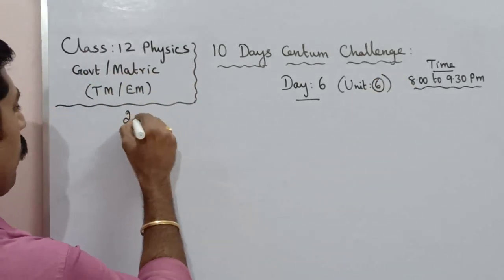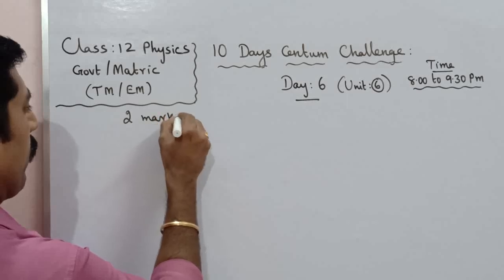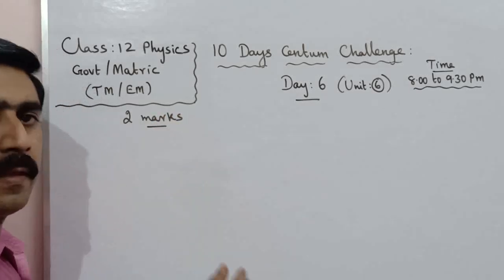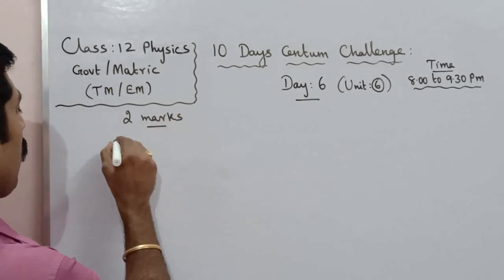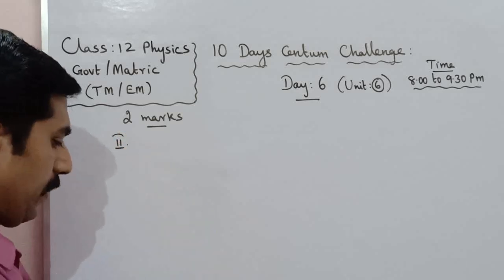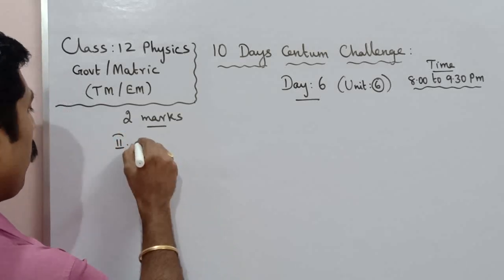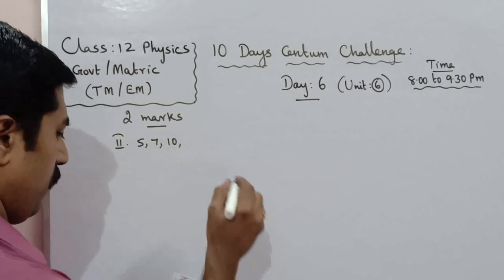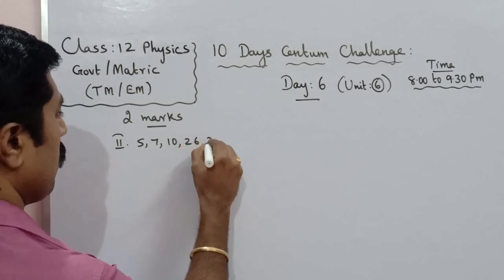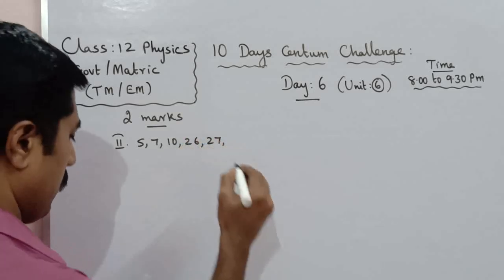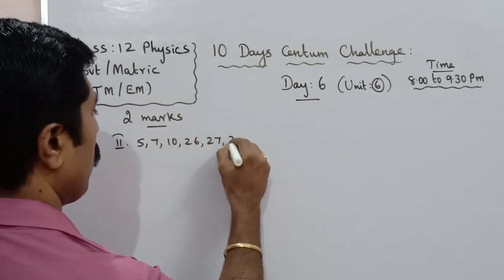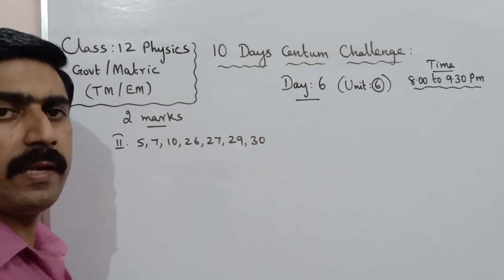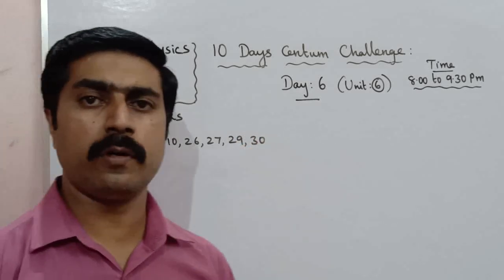First, we are going to talk about 2-mark questions. Roman numeral 2, book exercise — question numbers 5, 7, 10, 26, 27, 29, and 30. These are the questions we are going to cover.